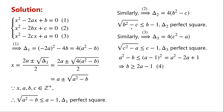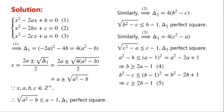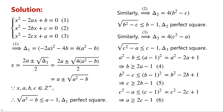Similarly, as the square root of b squared minus c is less than or equal to b minus 1, so b squared minus c is less than or equal to (b minus 1) squared, which equals b squared minus 2b plus 1. The b squared terms cancel, giving c is greater than or equal to 2b minus 1. As the square root of c squared minus a is less than or equal to c minus 1, so c squared minus a is less than or equal to (c minus 1) squared, which equals c squared minus 2c plus 1. The c squared terms cancel, giving a is greater than or equal to 2c minus 1.